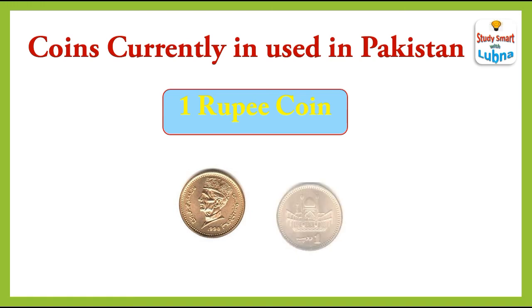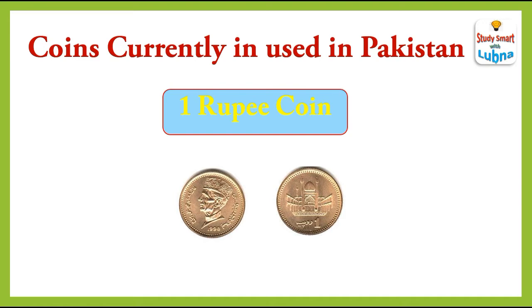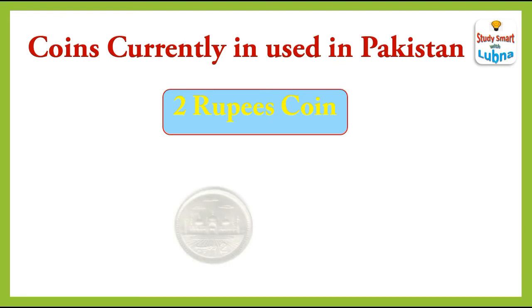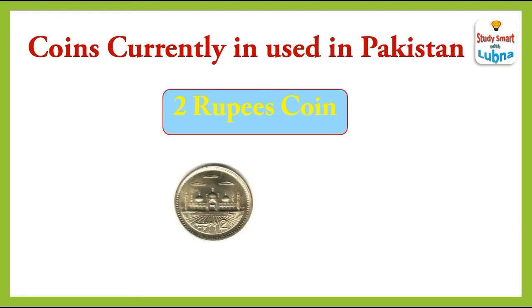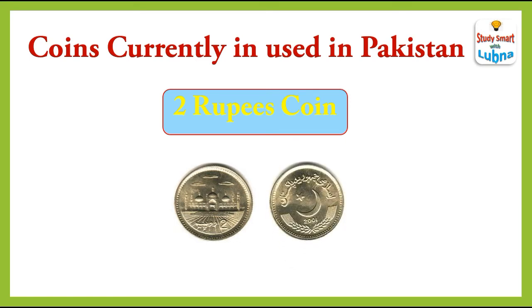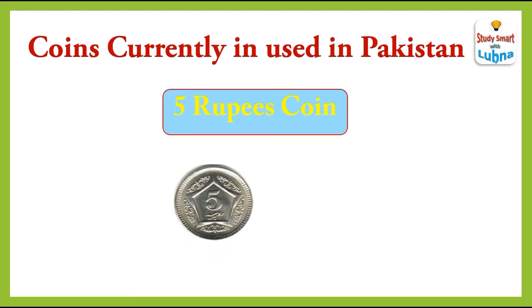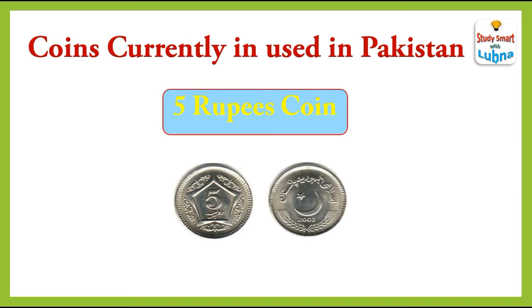One rupee coin: this is the front side of one rupee coin and this is the back side of one rupee coin. Two rupees coin: this is the front side of two rupees coin and this is the back side of two rupees coin. Five rupees coin: this is the front side of five rupees coin and this is the back side of five rupees coin.